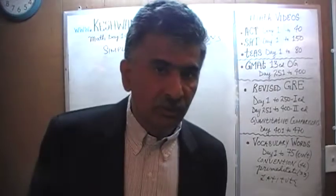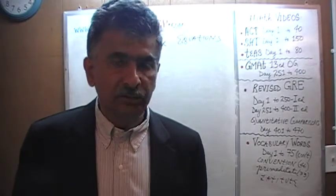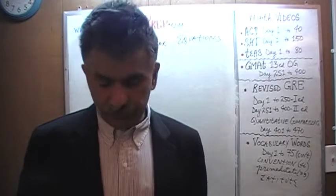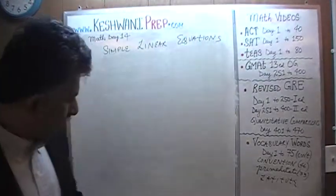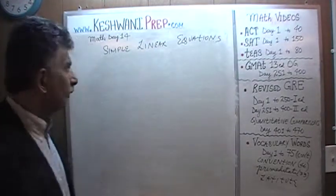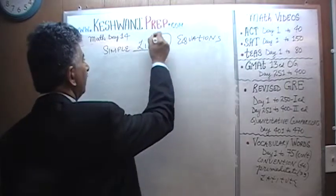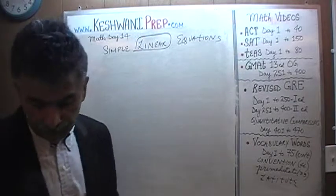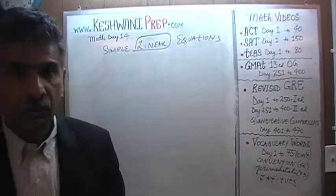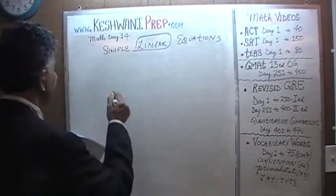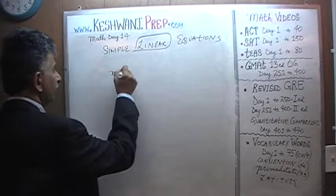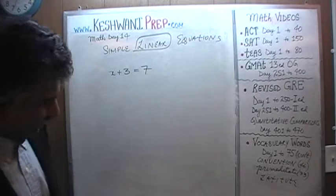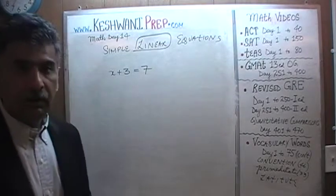What we are going to deal with today, this being our first encounter with these things, are very simple linear equations. Let's begin. First thing first — what do we mean by a linear equation? Linear equation means that the unknown that you see — for example, x plus 3 equals 7 — that is a linear equation.